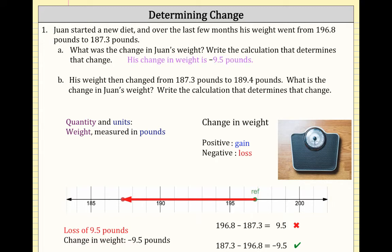To summarize part A: his change in weight is negative 9.5 pounds. That negative matters because this is a loss of weight, and a change can be either positive or negative. The calculation that produces this is 187.3 minus 196.8 equals negative 9.5.